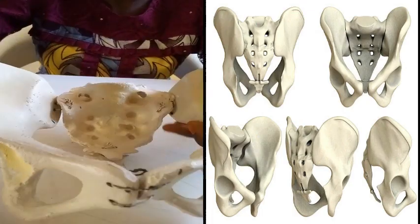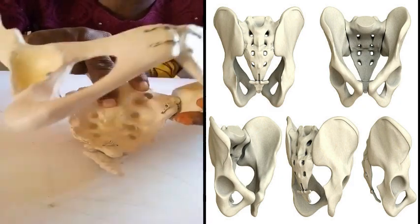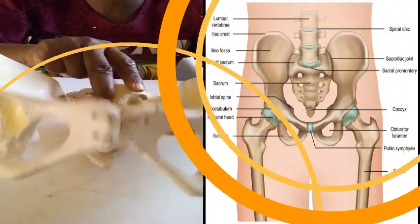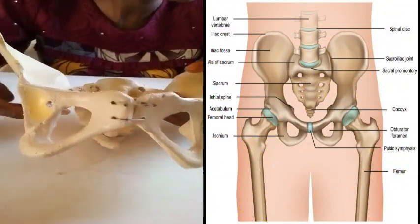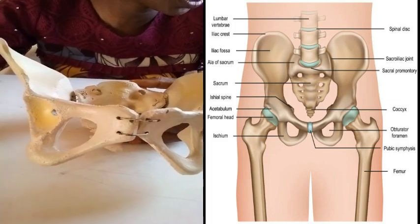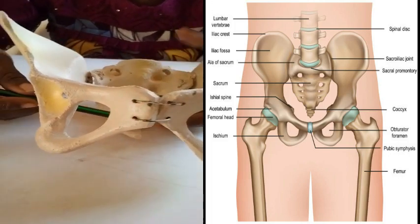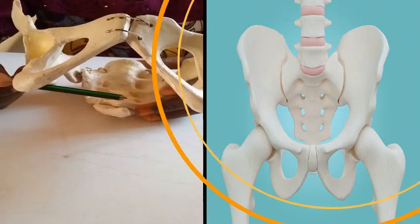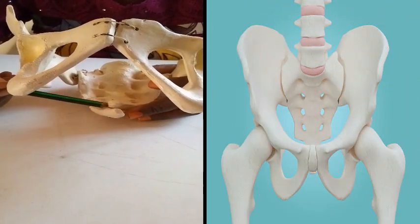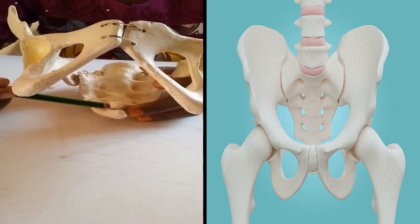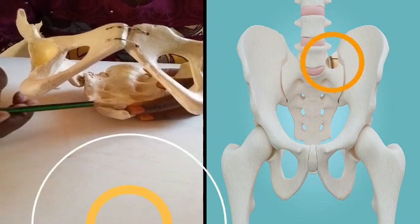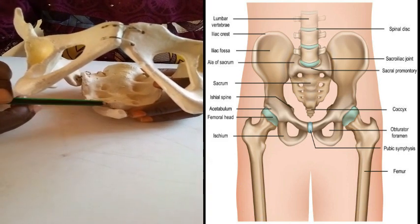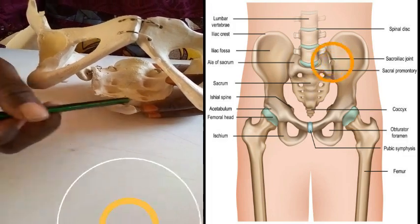The sacroiliac joints allow limited backward and forward movement, also known as nodding, of the sacrum. The sacrococcygeal joint is formed where the base of the coccyx articulates with the tip of the apex of the sacrum, and it permits the coccyx to be deflected backward during the process of delivery — that is, during the delivery of the fetal head.